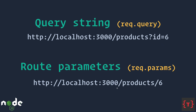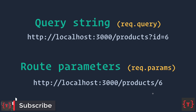Now let's see what route parameters are. If we go to localhost port 3000 slash products slash six, we can extract that six — the product id — as a route parameter. Inside an Express application this is done using request.params, and if you have more parameters those can also be extracted.